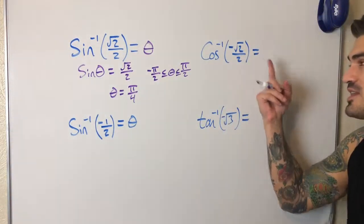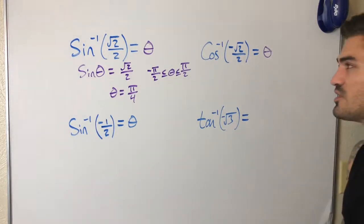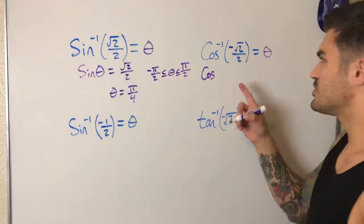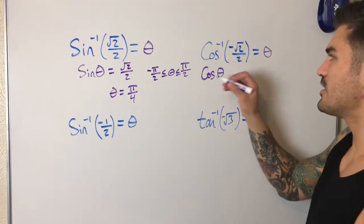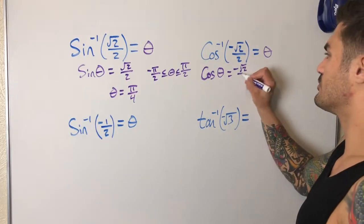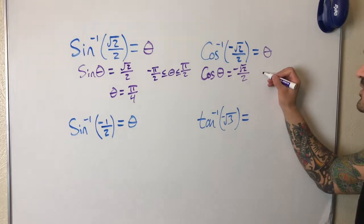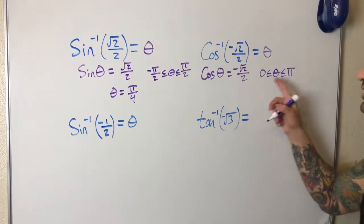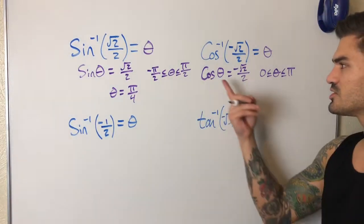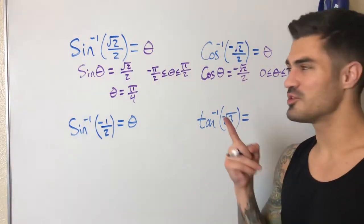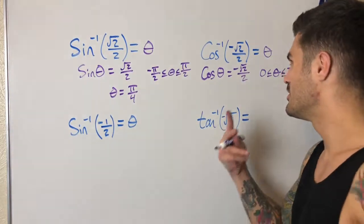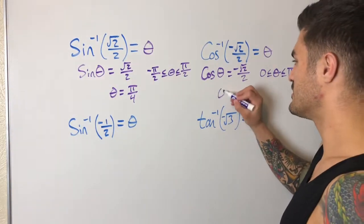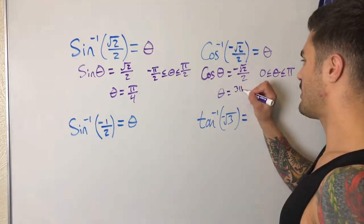Now let's find cosine inverse of negative √2/2. Again, I'm looking for some angle. Using the definition, this is like asking: cosine of what angle gives me negative √2/2? Remember that angle has to be between 0 and π, both inclusive. The negative value means second or third quadrant, but given the range, it must be in the second quadrant. So theta is 3π/4.